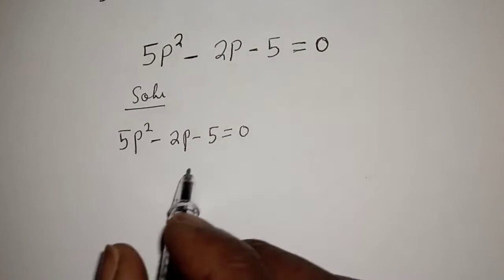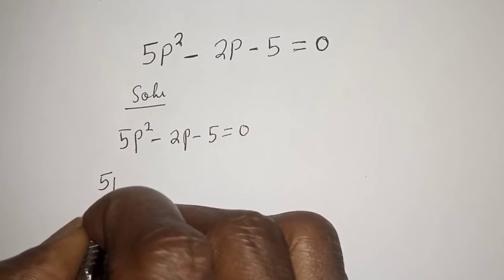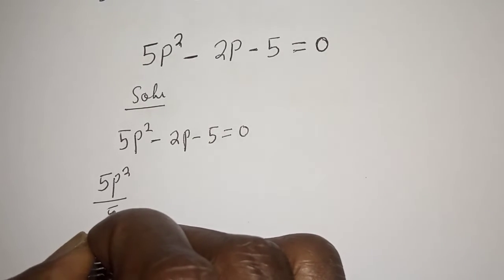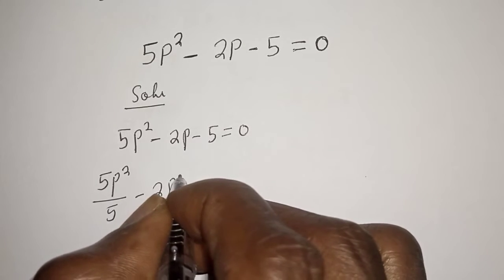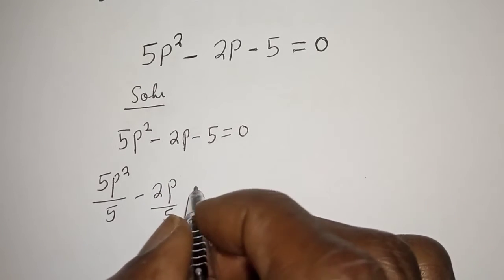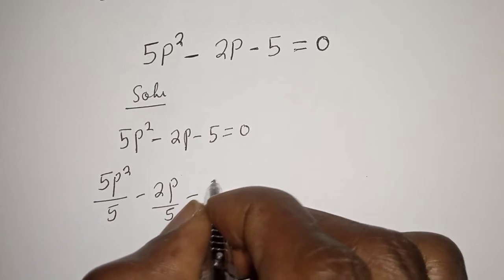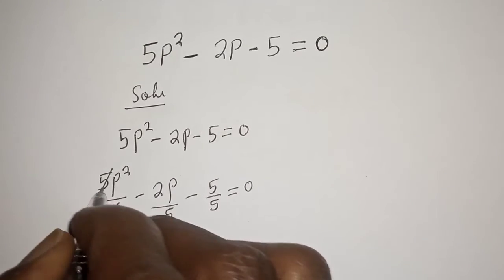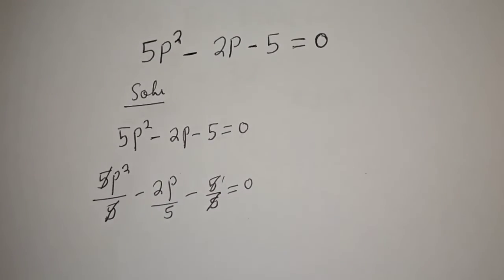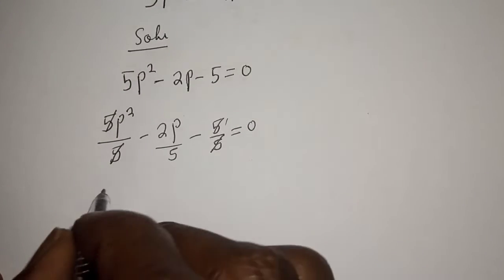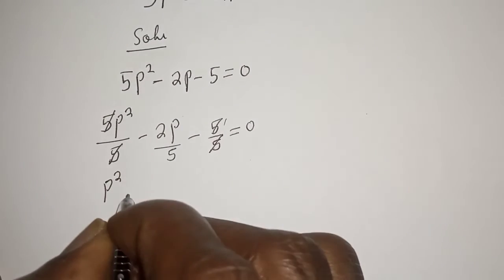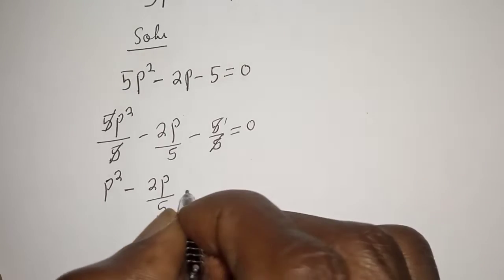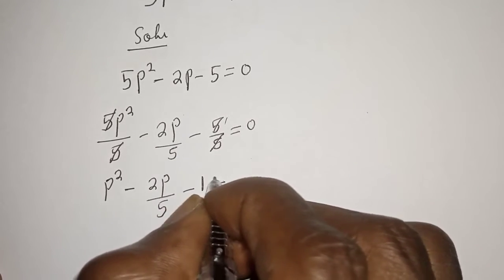Let's divide all terms by 5. So 5p squared over 5 minus 2p over 5 minus 5 over 5 equals 0. This cancels, giving us p squared minus 2p over 5 minus 1 equals 0.